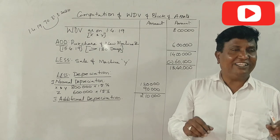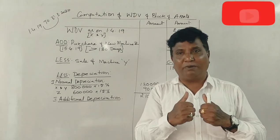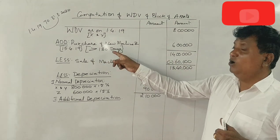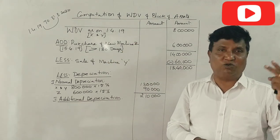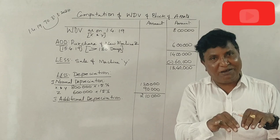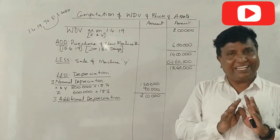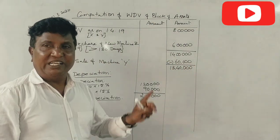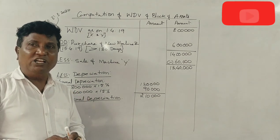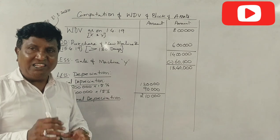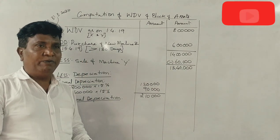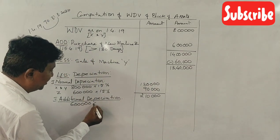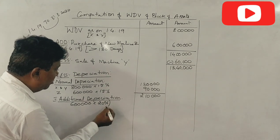Regarding the rate of additional depreciation: if the machine is purchased and used for more than 180 days, 20% additional depreciation is given; if less than 180 days, 10% is given. Normal depreciation is separate — additional depreciation is calculated on the purchase amount. More than 180 days: full 20%; less than 180 days: 10%.